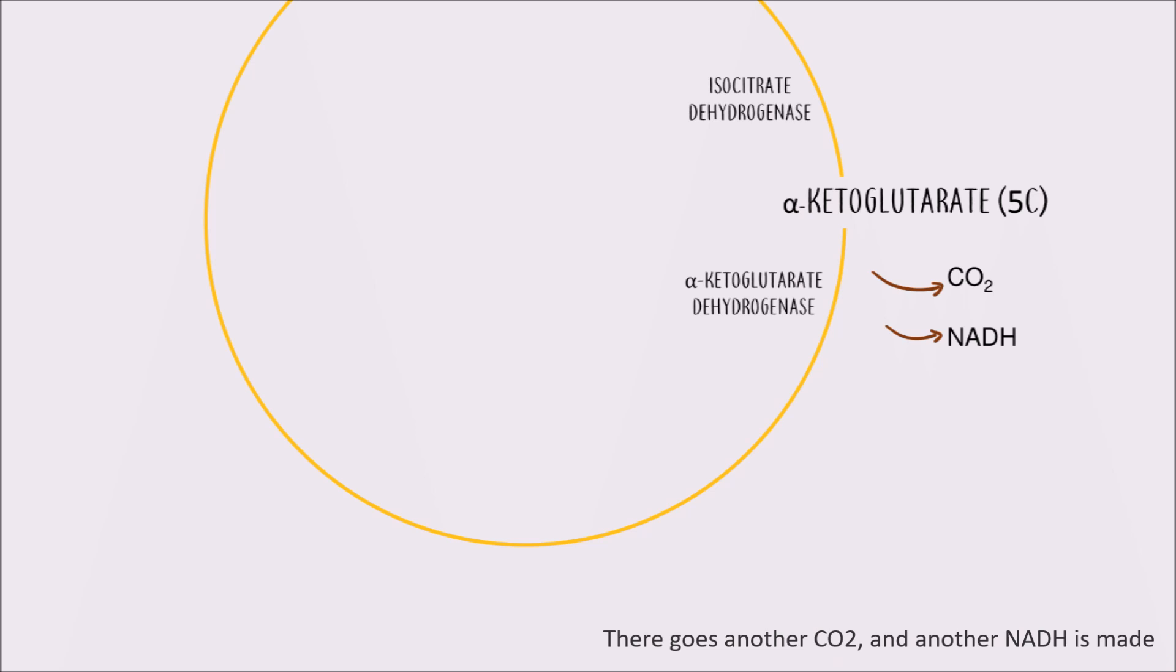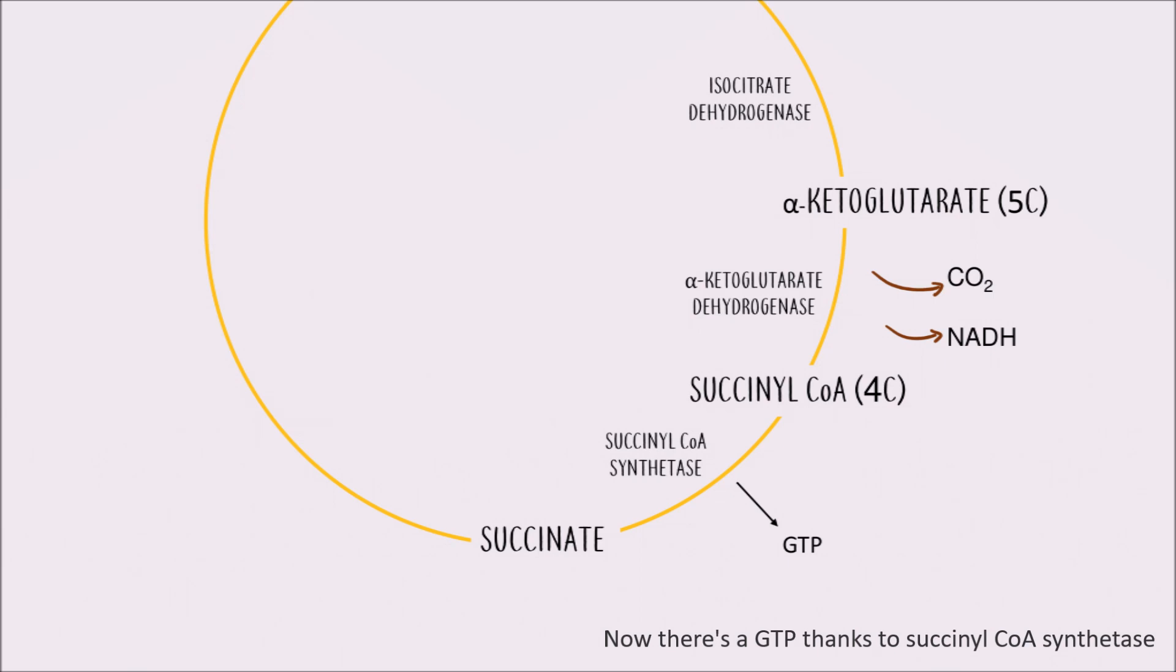There goes another CO2 and another NADH is made. A new 4C succinyl-CoA loses its thiol bond to make succinate. Now there's a GTP thanks to succinyl-CoA synthetase.